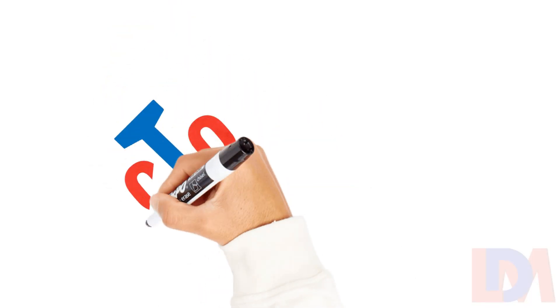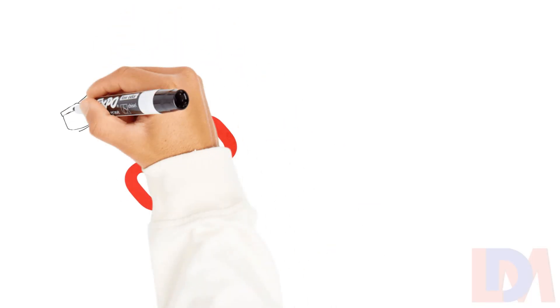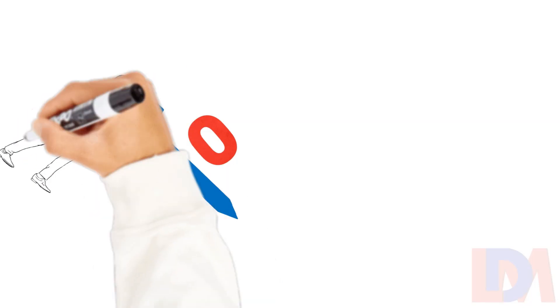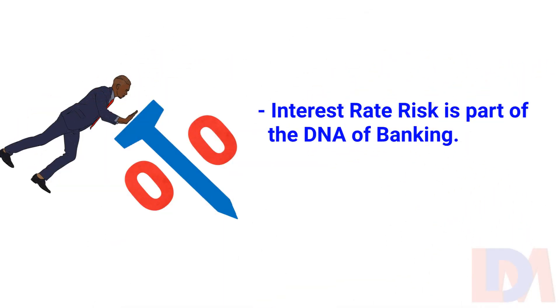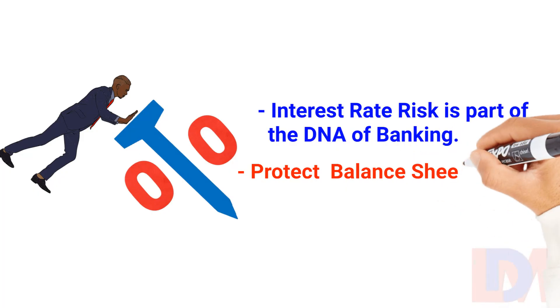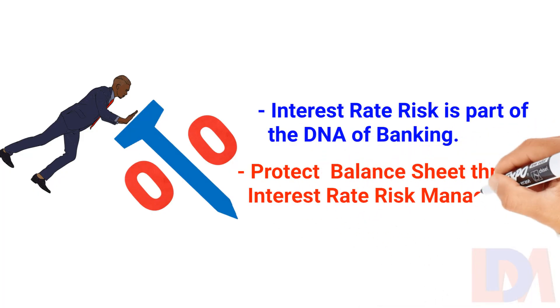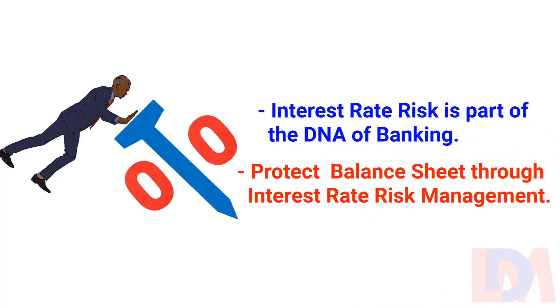Interest rate risk is part of the DNA of banking — you can't eliminate it, but you can measure and manage it. By following the Basel guidelines, banks protect not just their own balance sheets, but also the stability of the entire financial system.